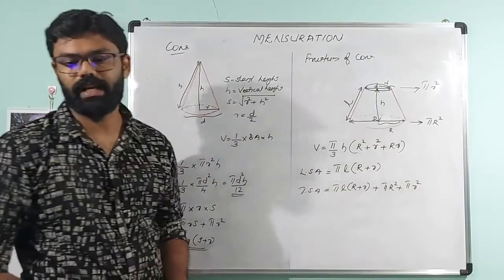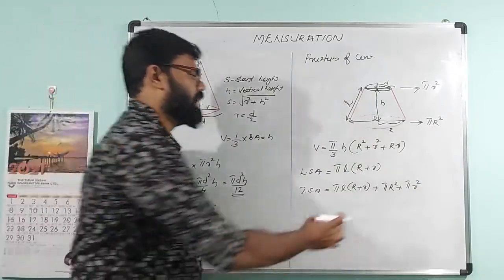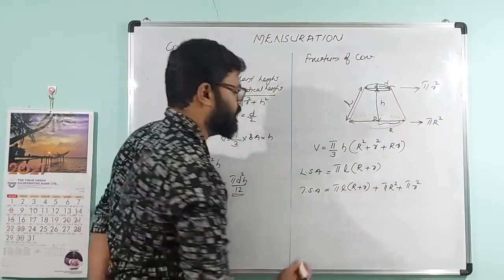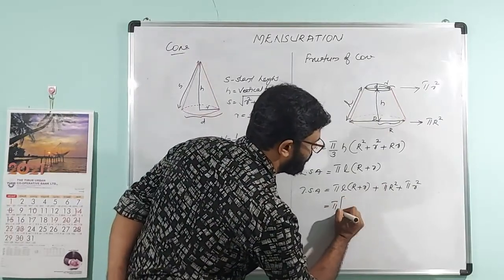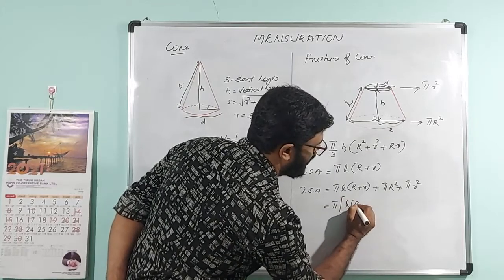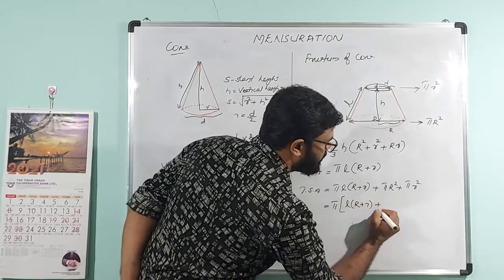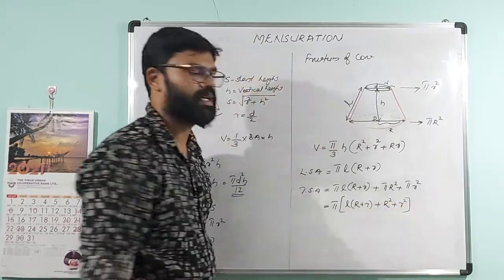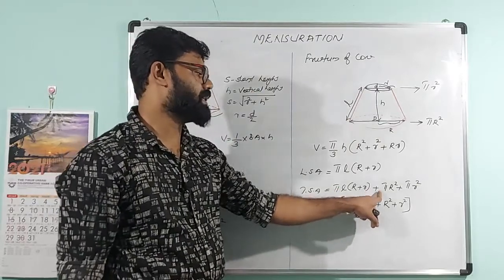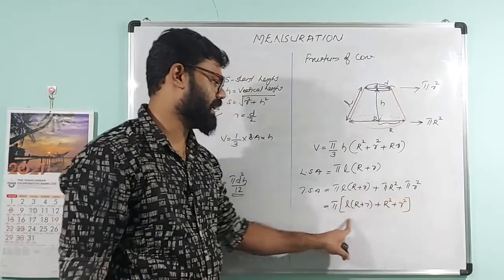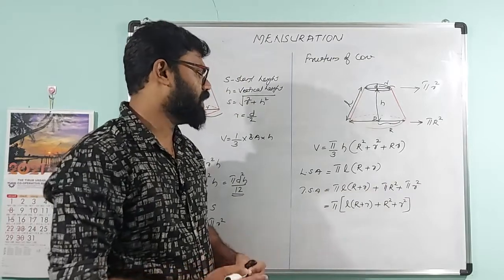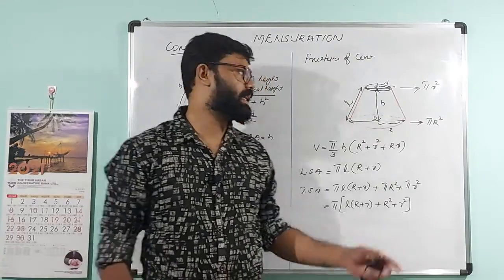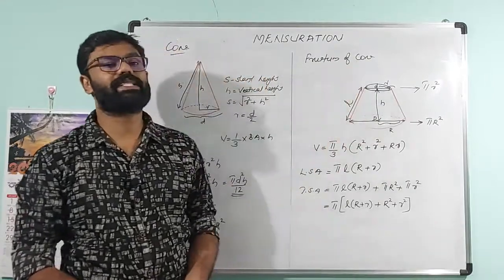The total surface area of the frustum of cone is: π l (R + r) + π R² + π r², which can be written as π [l(R + r) + R² + r²].